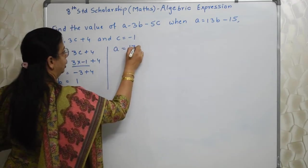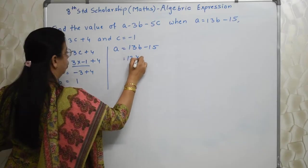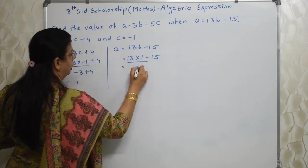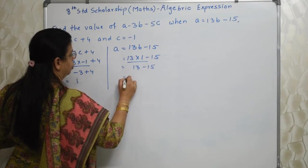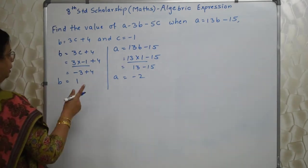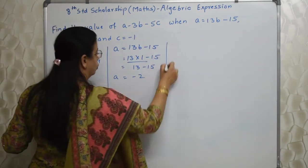So a is equal to 13b minus 15. So 13 into 1 minus 15. So 13 minus 15. So answer is minus 2. So a is minus 2. Once you get the values of abc finding out the value of this is not a big thing at all.